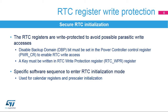The RTC is initialized using a secure method. The RTC registers are write-protected to avoid any possible parasitic write accesses. First, the disable backup domain protection bit must be set in the power controller control register in order to enable RTC write accesses. Then, a specific sequence must be written in the RTC write protection register.